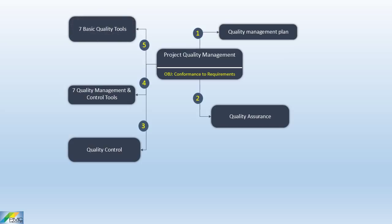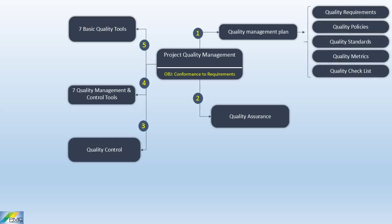The first key concept is the quality management plan. A quality management plan is a component of the project management plan. It describes how the organization's quality policies will be implemented and how the project team plans to meet the quality requirements for the project. Quality metrics and quality checklist are significant outputs from planning processes and will be used in quality control and quality assurance respectively.